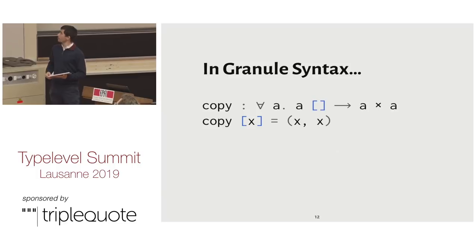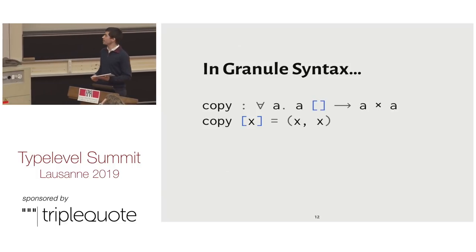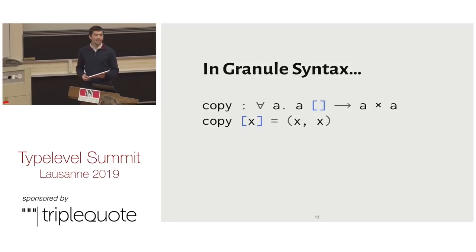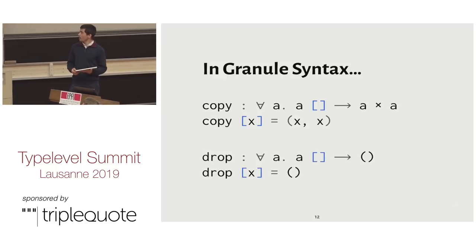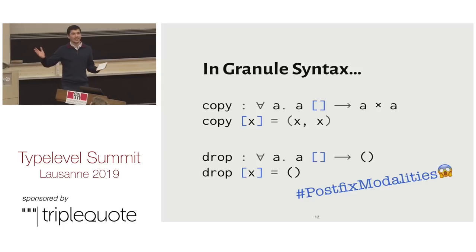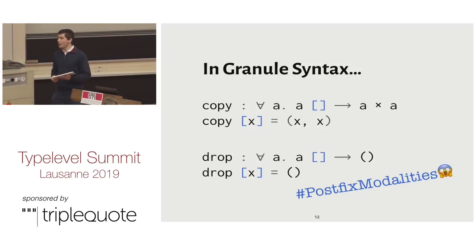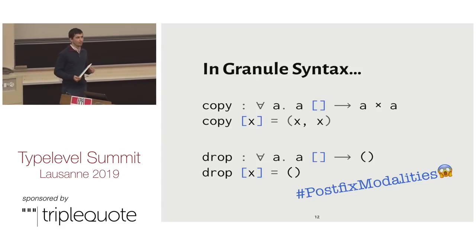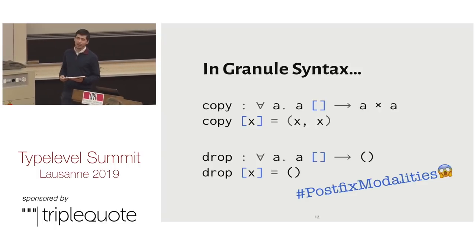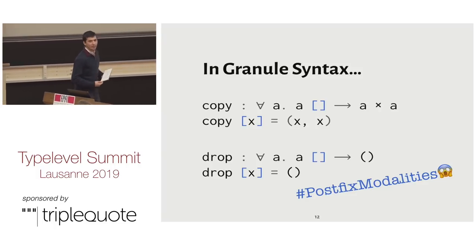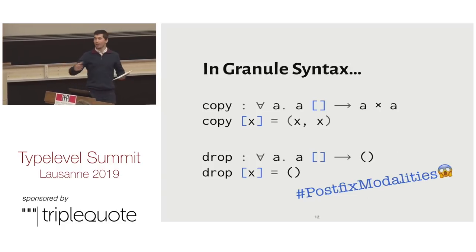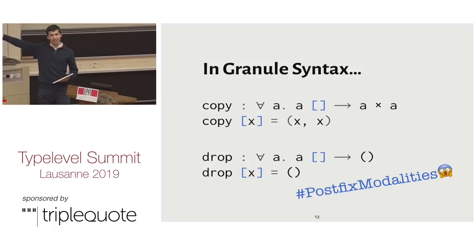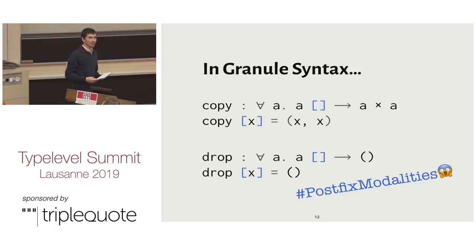In Granule syntax, we have these little boxes behind the A. This means it's a box of A. At the value level, you use the brackets to do an unboxing pattern match. These correspond to modalities from modal logic. We have them postfix, which is a bit weird, but they can get long because these are actually graded modalities — there's information inside them — and the type of the thing is still more interesting than the modality.